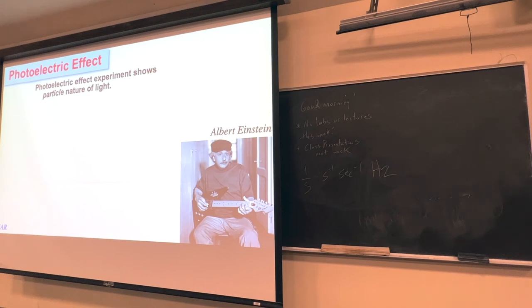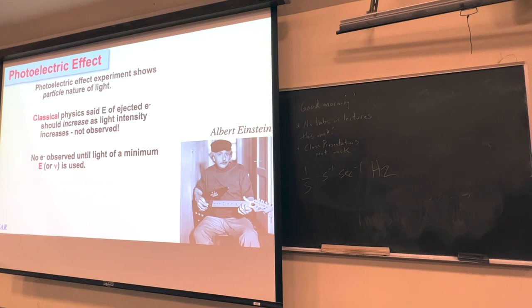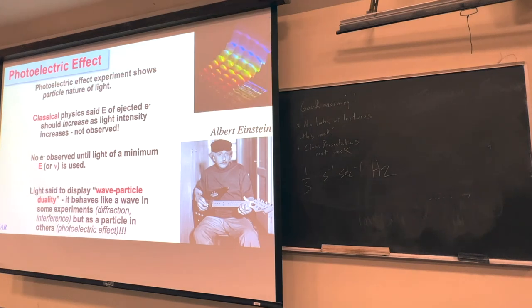What the photoelectric effect shows is that maybe light isn't just a wave. Einstein proposed that light has some particle behavior associated with it — because if light were particles, particles hitting particles could explain the electrons being knocked out. No one had thought about this. Classical physics said the number of electrons would vary with intensity, but what was actually seen was: no electrons were observed until a certain frequency threshold was reached.